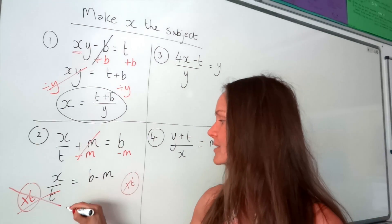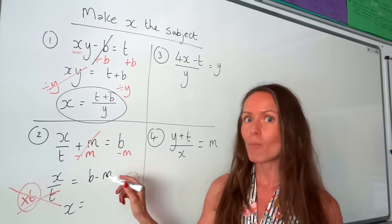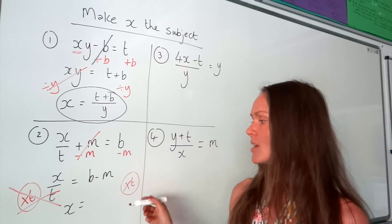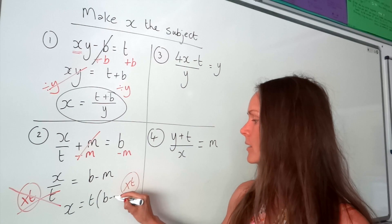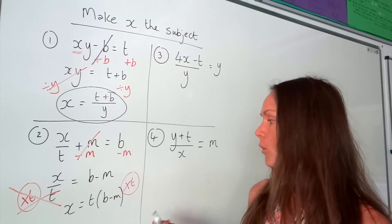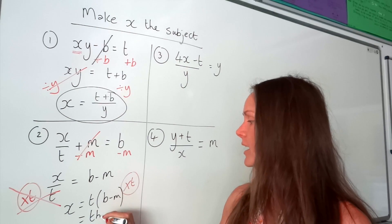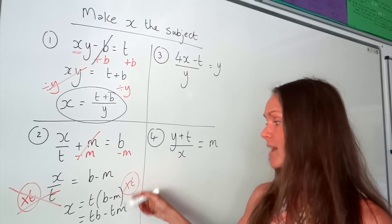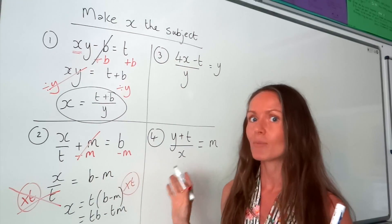On the right-hand side, be careful — you're multiplying everything here by t. So you could write it like this, putting this in brackets first. Or if you expand those brackets, that's fine as well. Either way is fine, as long as you're multiplying everything by t.